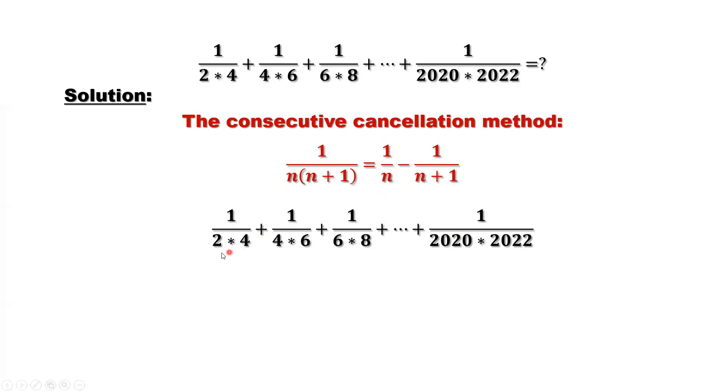How? Check the denominator of each term. The product of two consecutive even numbers. Even number, you have a factor of two. Each one you have a factor of two. We can factor four out from each denominator.